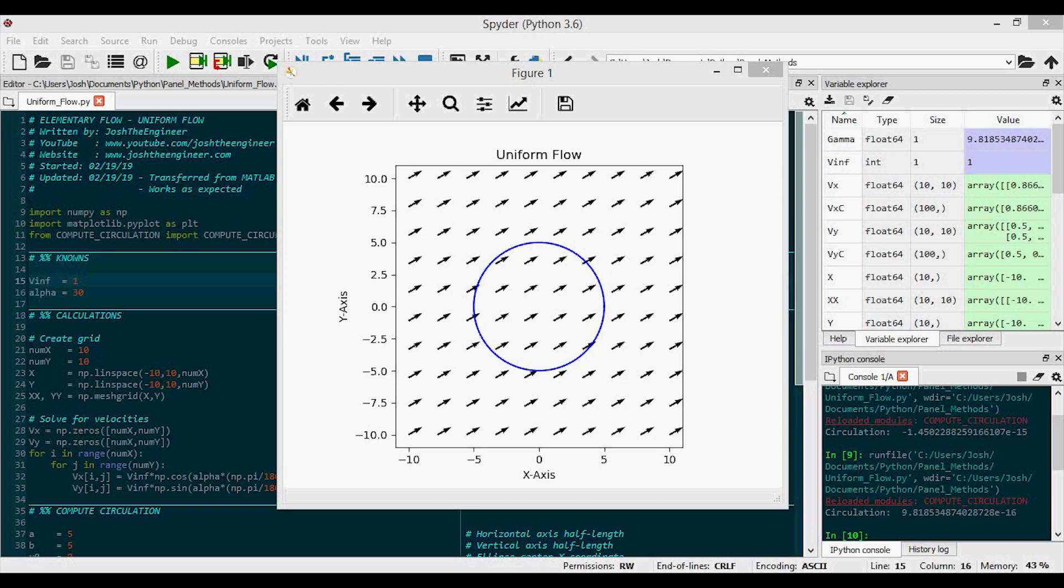So, this was a simple introduction to uniform flow, and how to code up a program that computes the velocity at every grid point in a uniform flow. For a more complicated flow, and the next logical step in this series, see my source or sync flow video. So, thanks for watching.